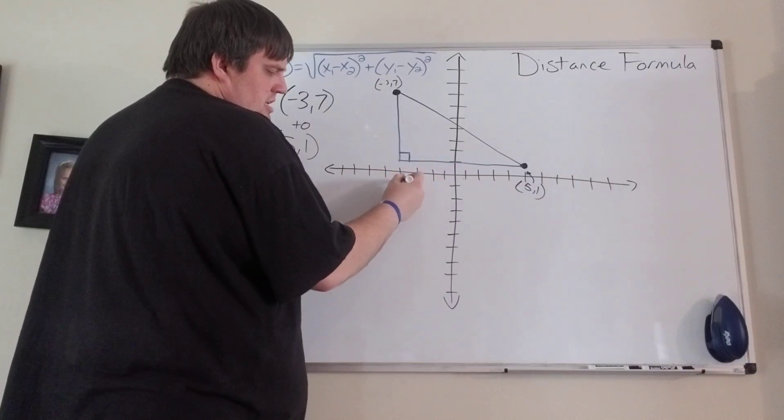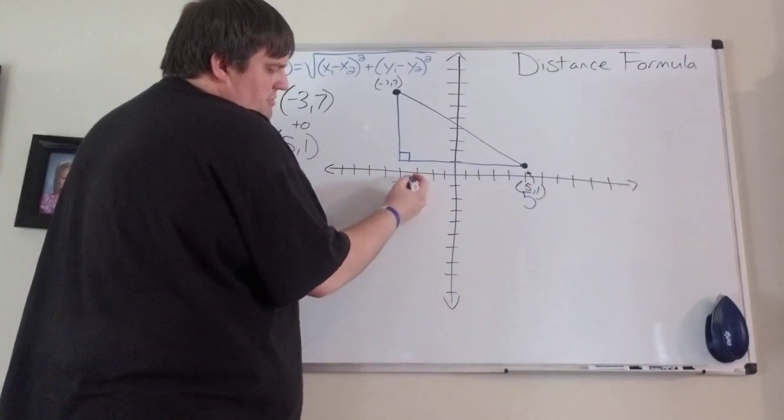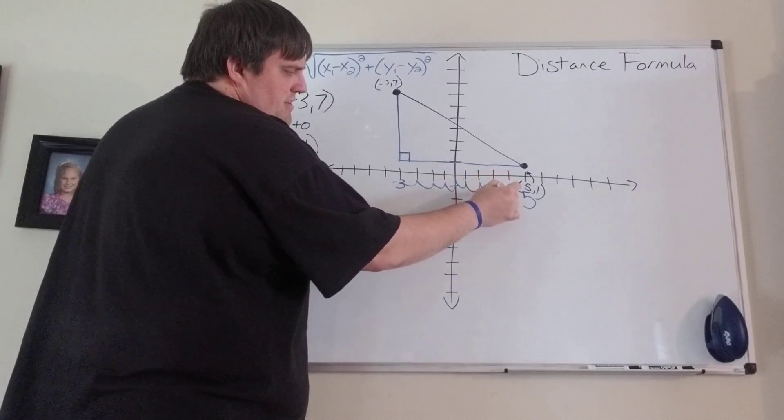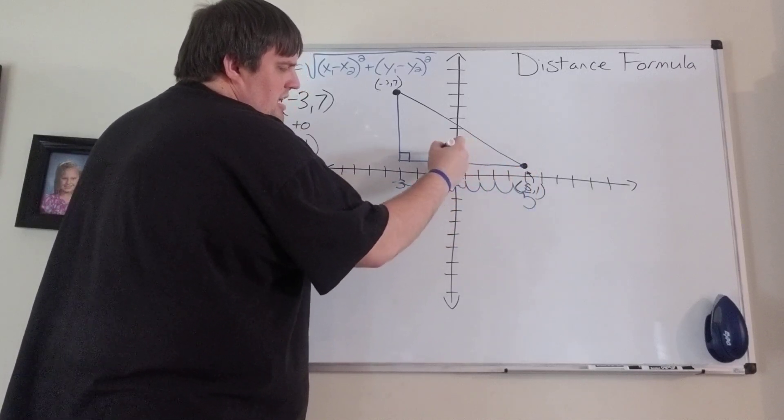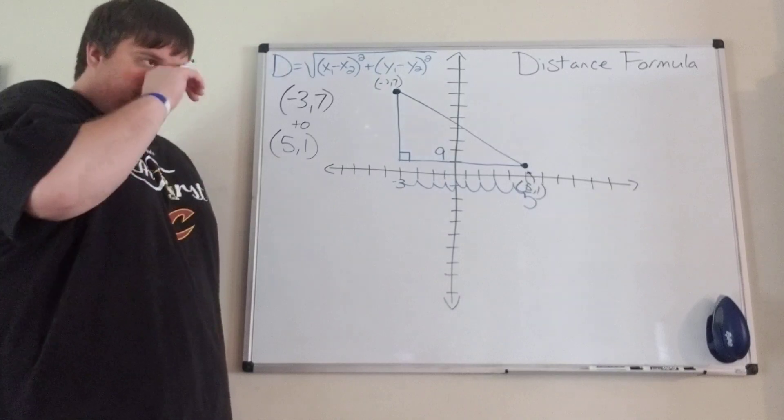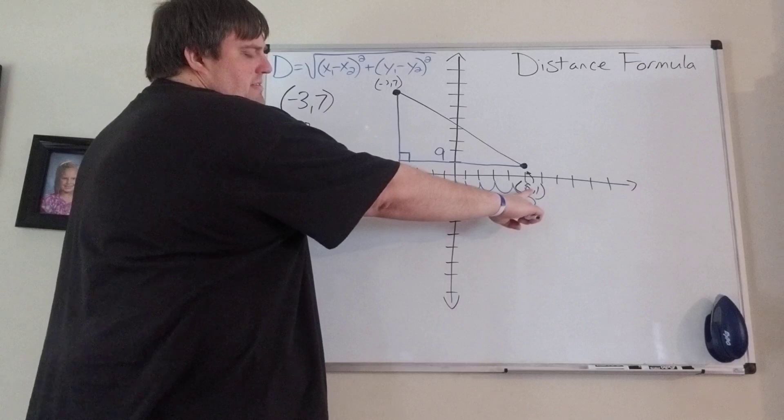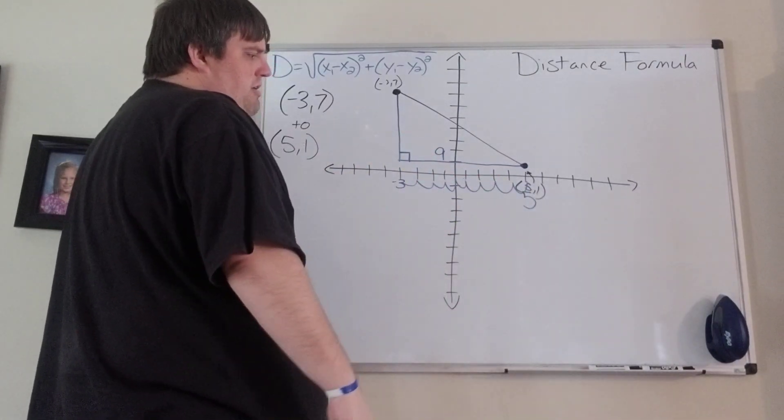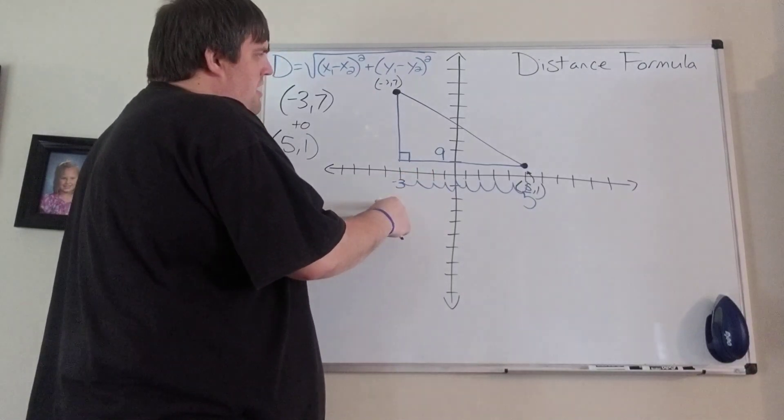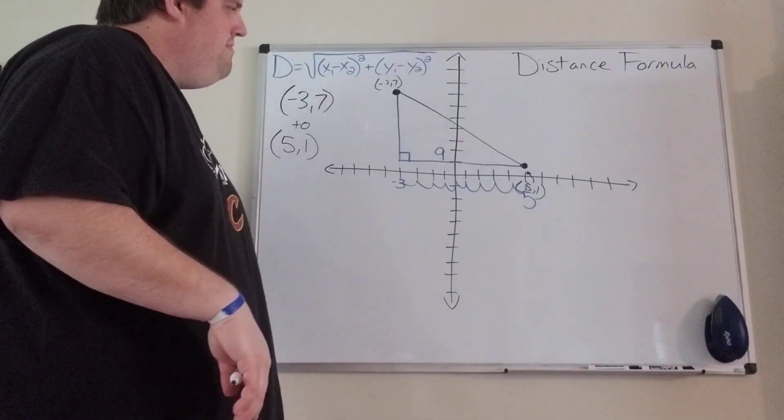Now this is what's really cool about if you like this graphic version - I can really just count how long this side is. It goes from negative three on the X right here to five on the X. So from negative three, it's going to be one, two, three, four, five, six, seven, eight units long. And we just say units because it's not inches or anything because it's a graph.